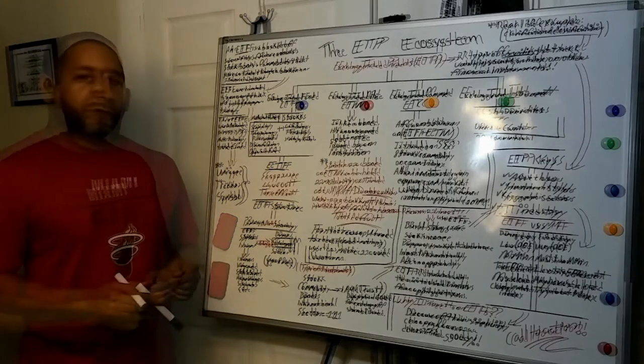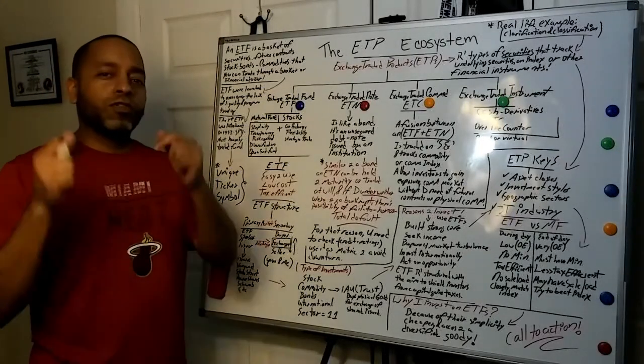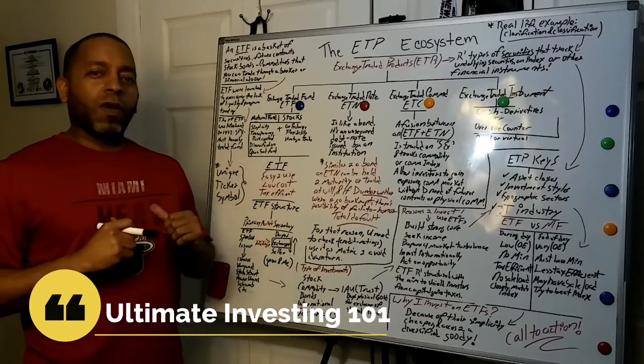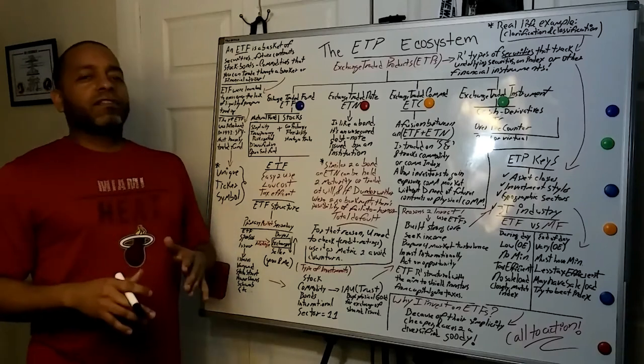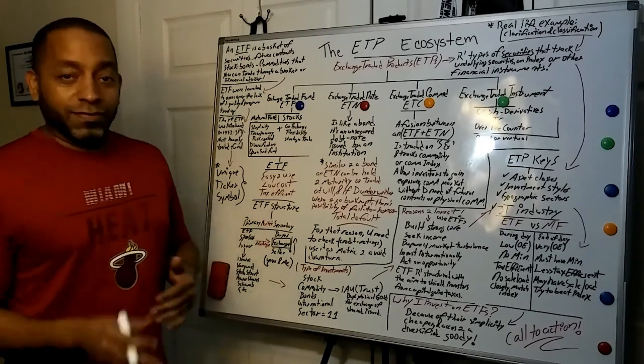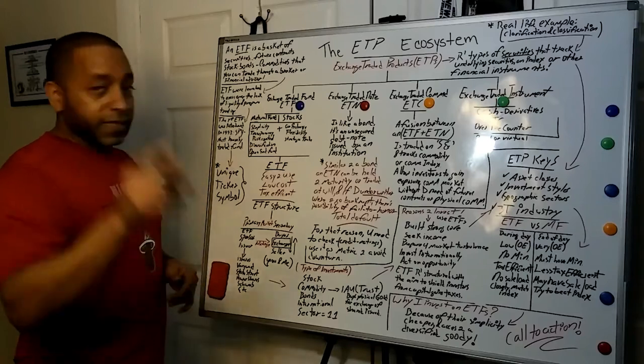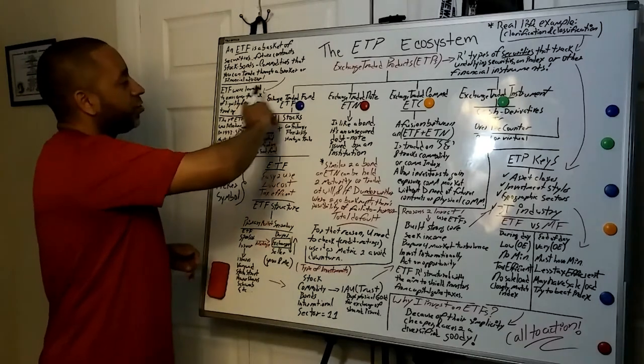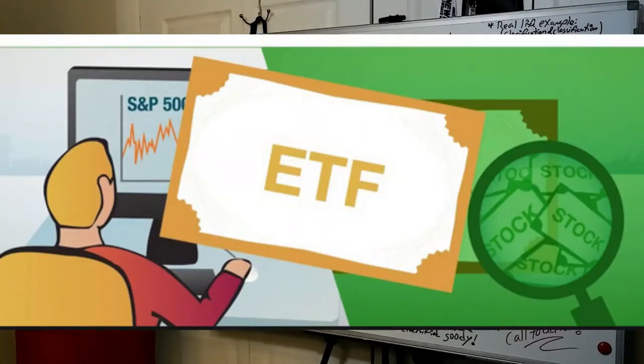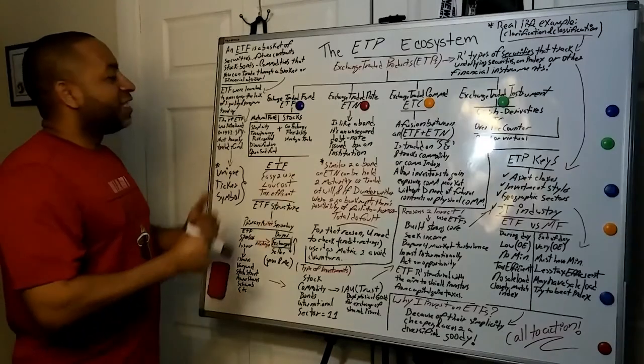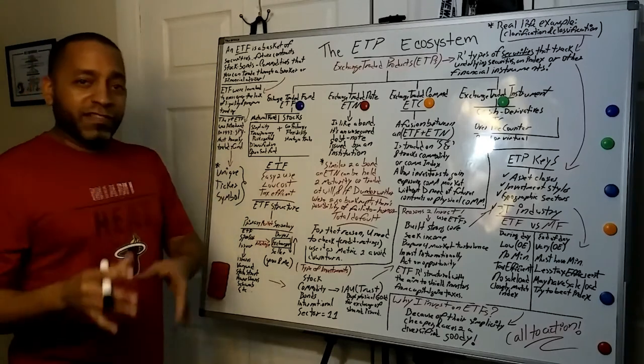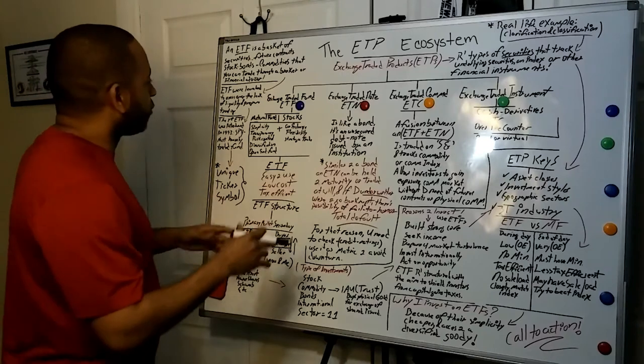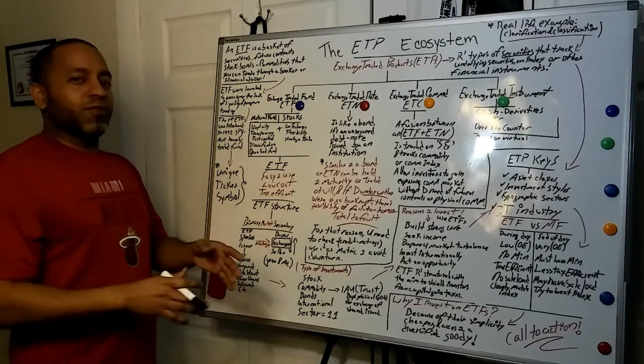ETI, very simple. Second one, exchange traded commodities, ETC. This one focused on the commodities as far as gold, silver, livestock, corn, things like that, crude oil. And this one literally is the fusion between the ETF and the ETN.